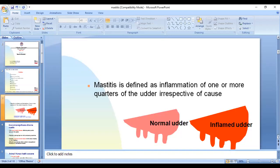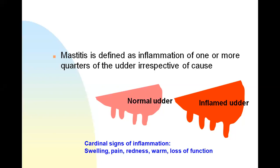Mastitis is defined as inflammation of one or more quarters of the udder, irrespective of the cause. The udder is also known as the mammary glands of the animals. Because dairy animals are kept for milk purposes, the udder is one of the most important parts of the animal. If there is any problem in the udder, the milk production of the animal will be affected. Because of this, mastitis is one of the most important diseases of ruminants.